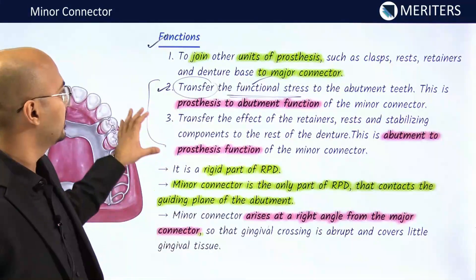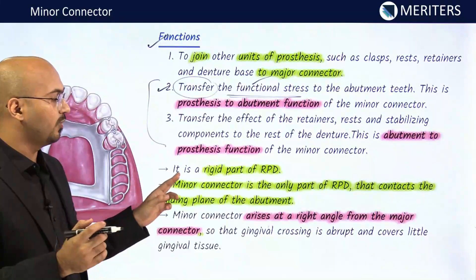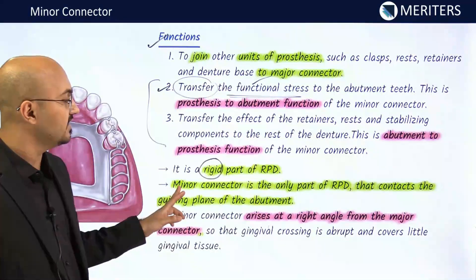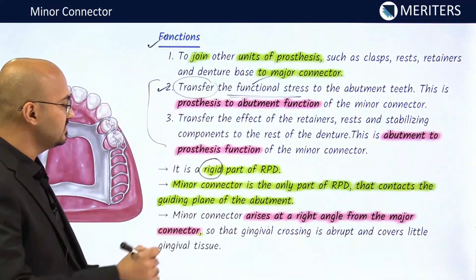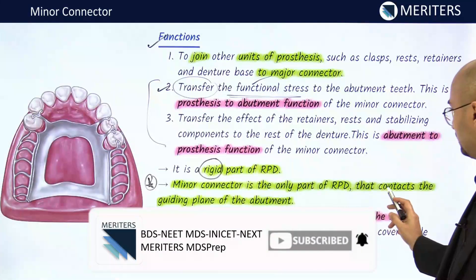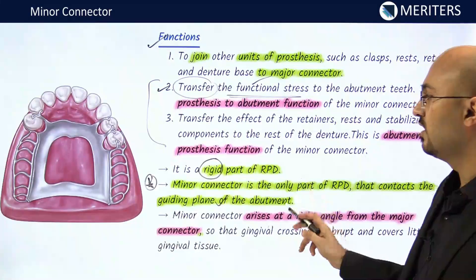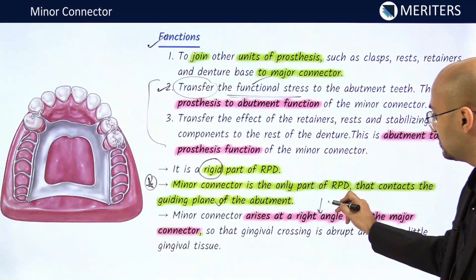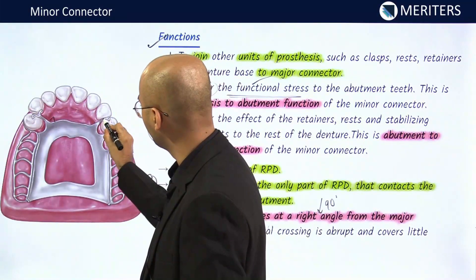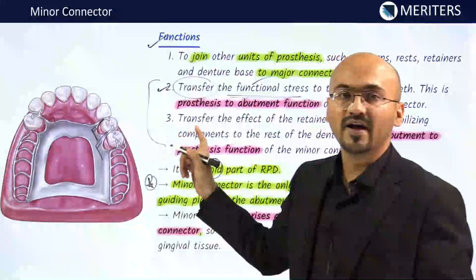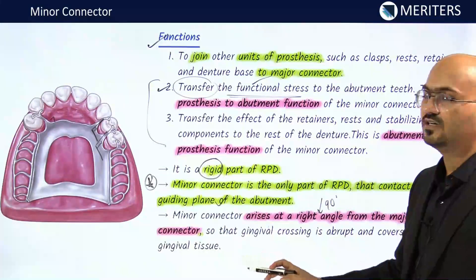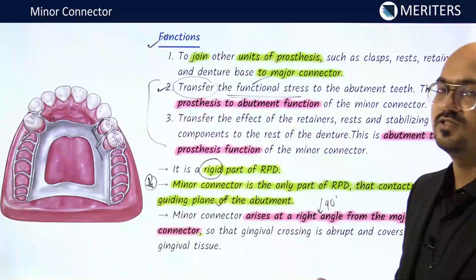An important property is that the minor connector must be rigid — if it is not rigid, it will not be able to dissipate forces. The minor connector is the only part of the RPD that contacts the guide plane of the abutment, which is important for the exam. A minor connector arises at 90 degrees — a right angle — from the major connector, so that the gingival crossing is abrupt and covers little tissue, minimizing the effect on the gingival.